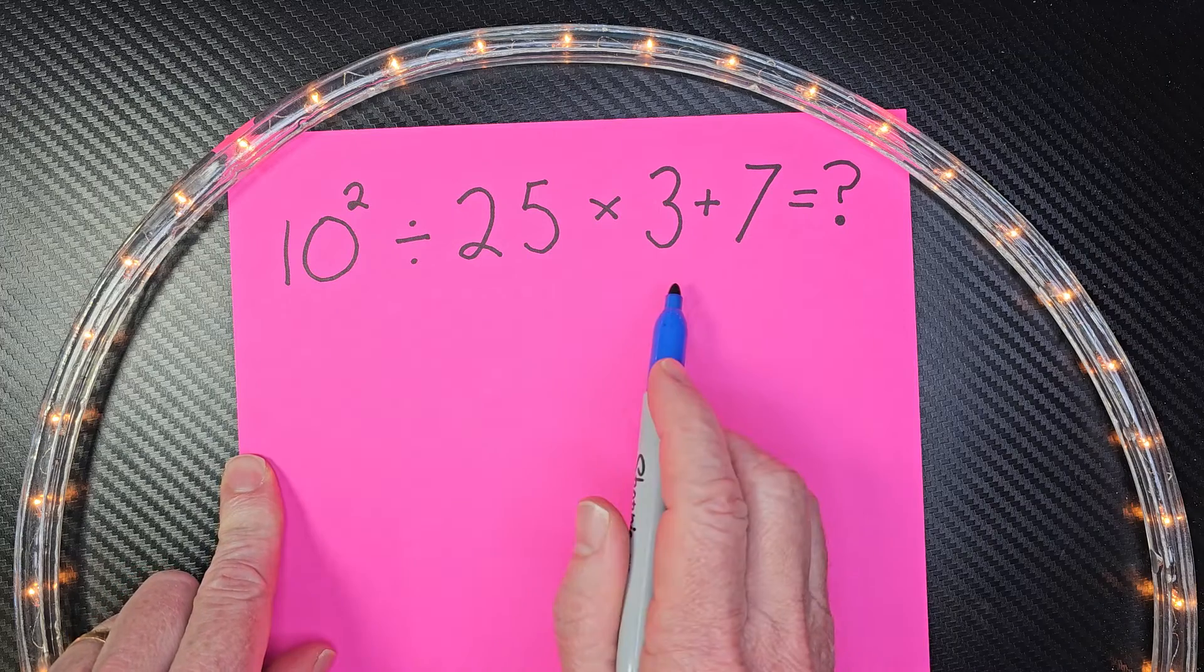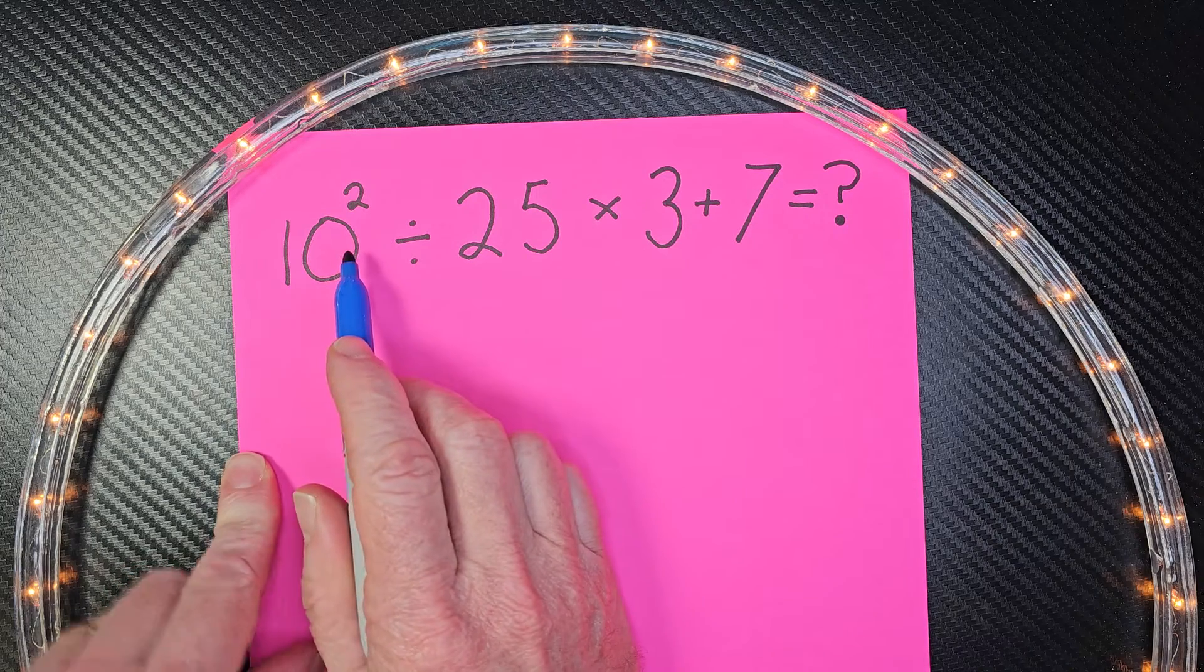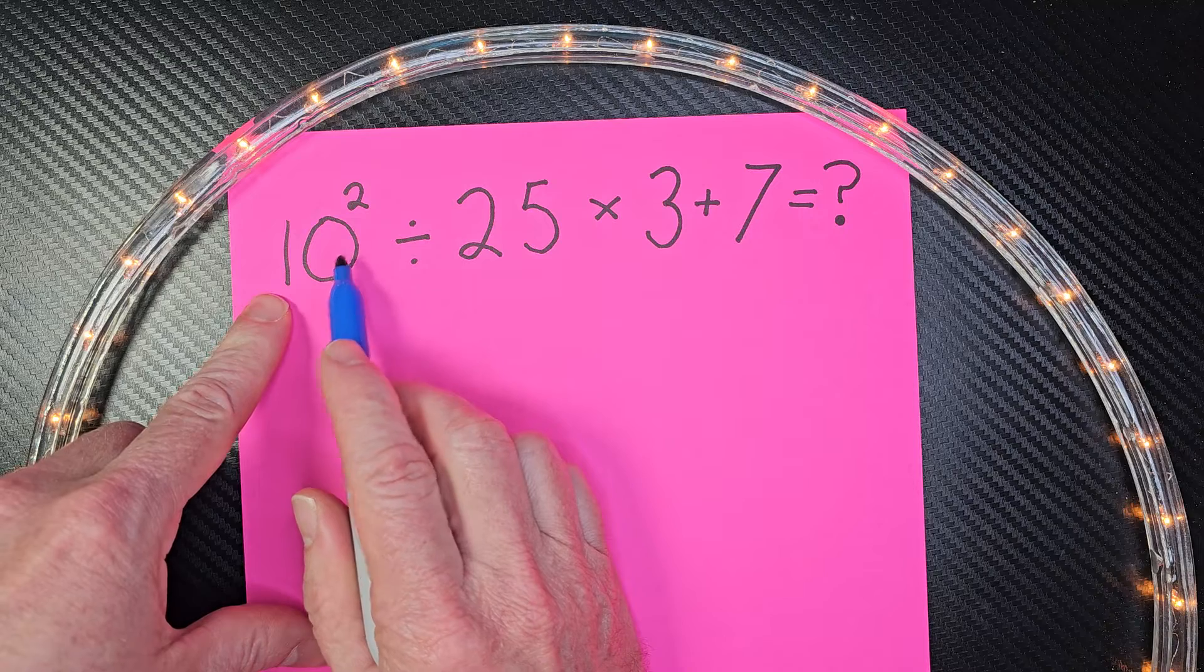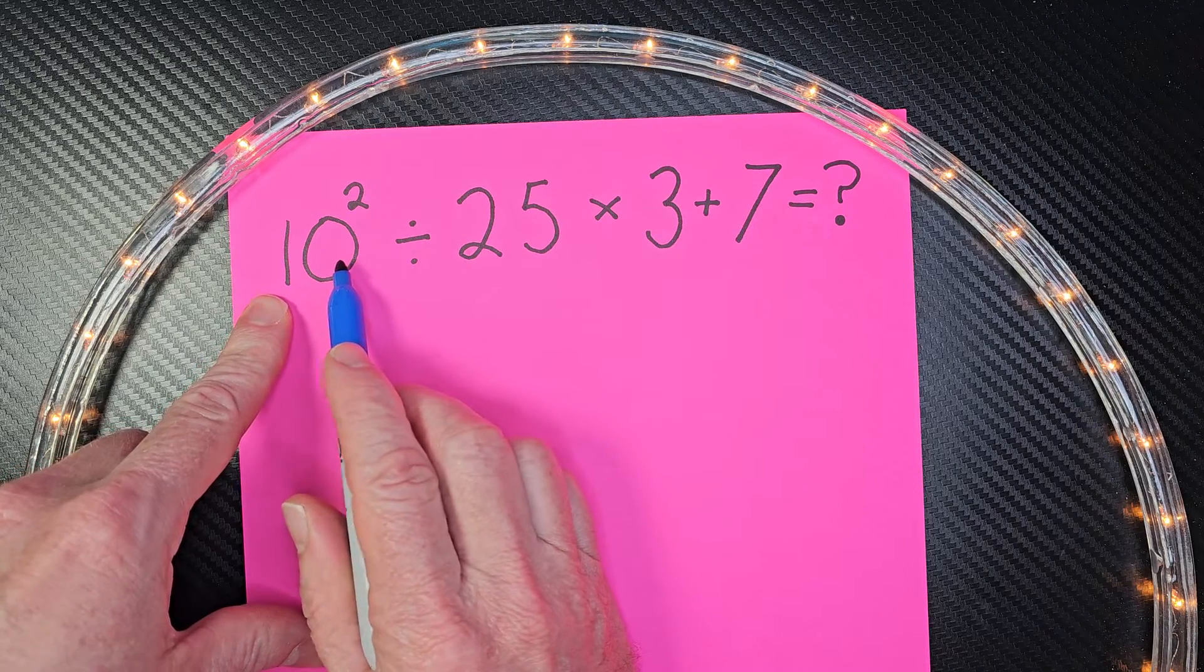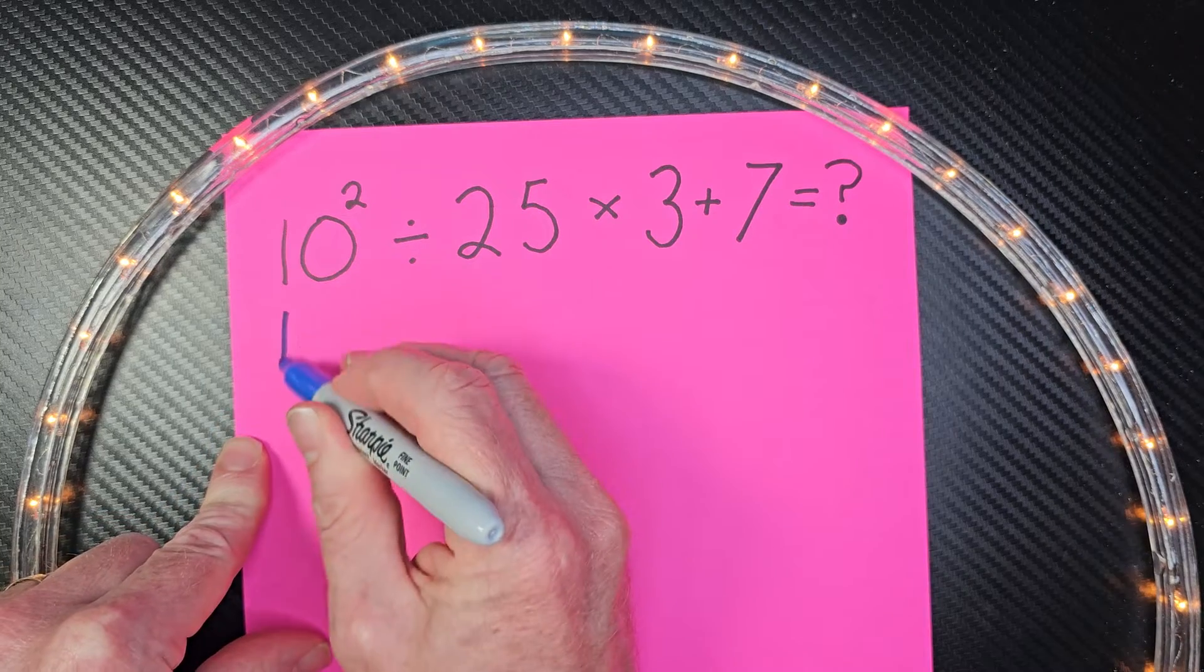There are no parentheses, but there is an exponent, so we're going to do that first. 10 to the second power - that would be 10 times 10, which equals 100.